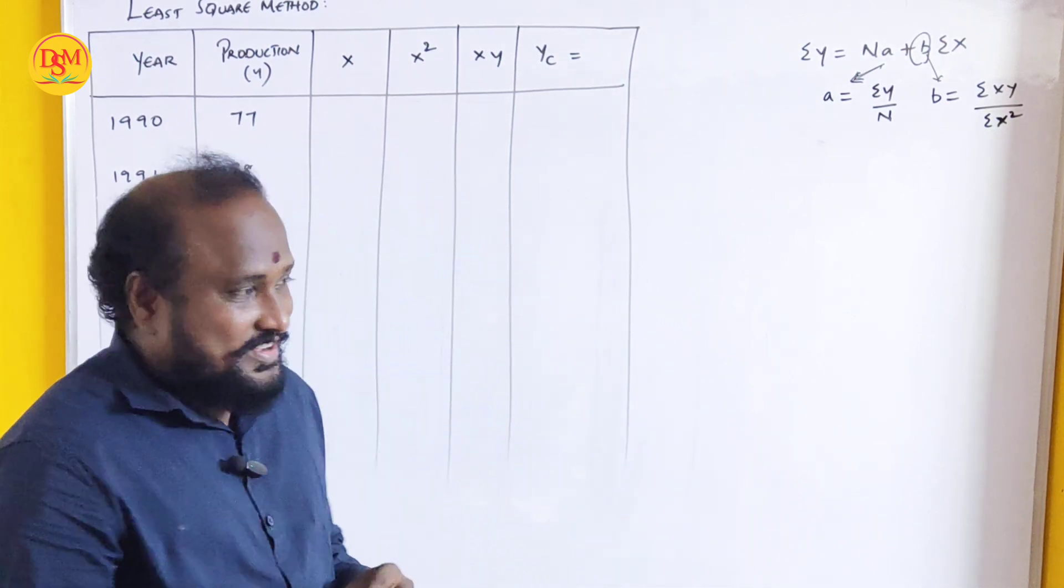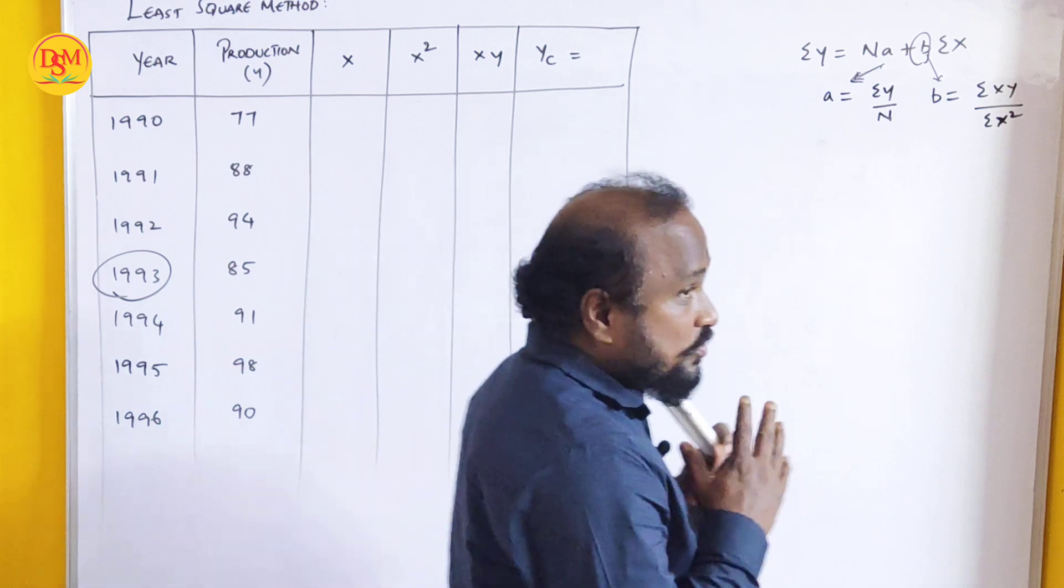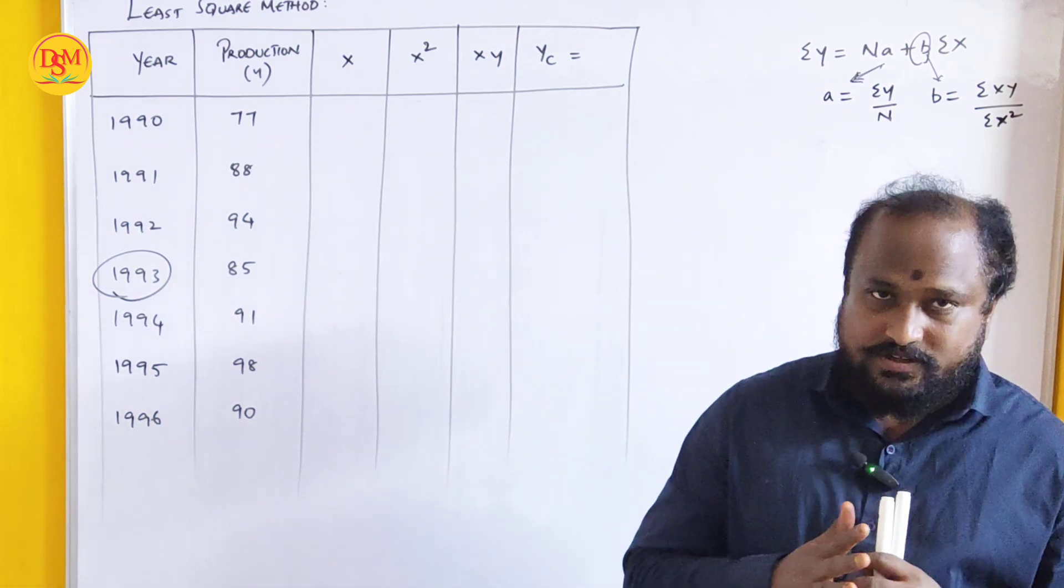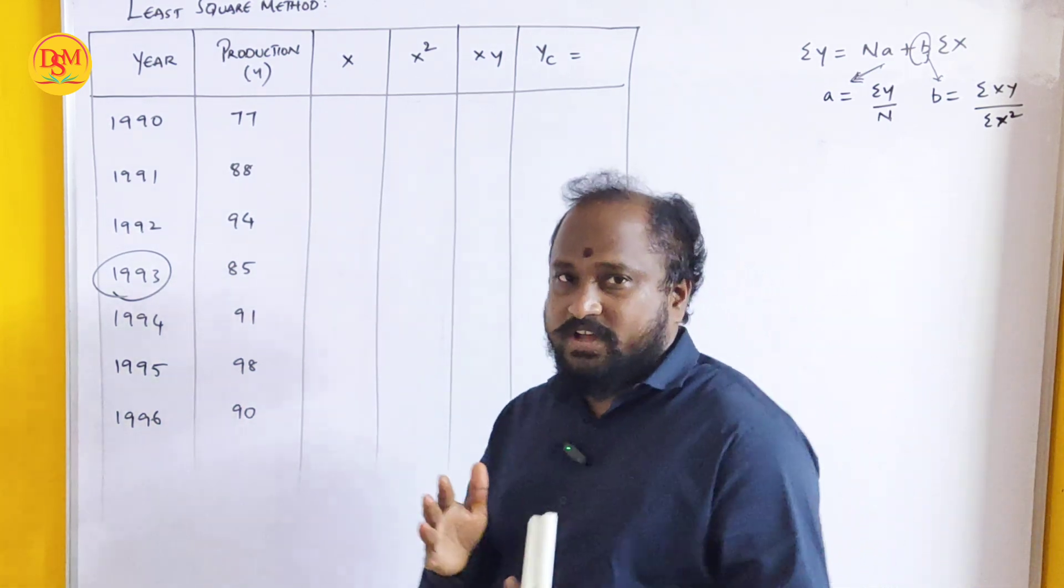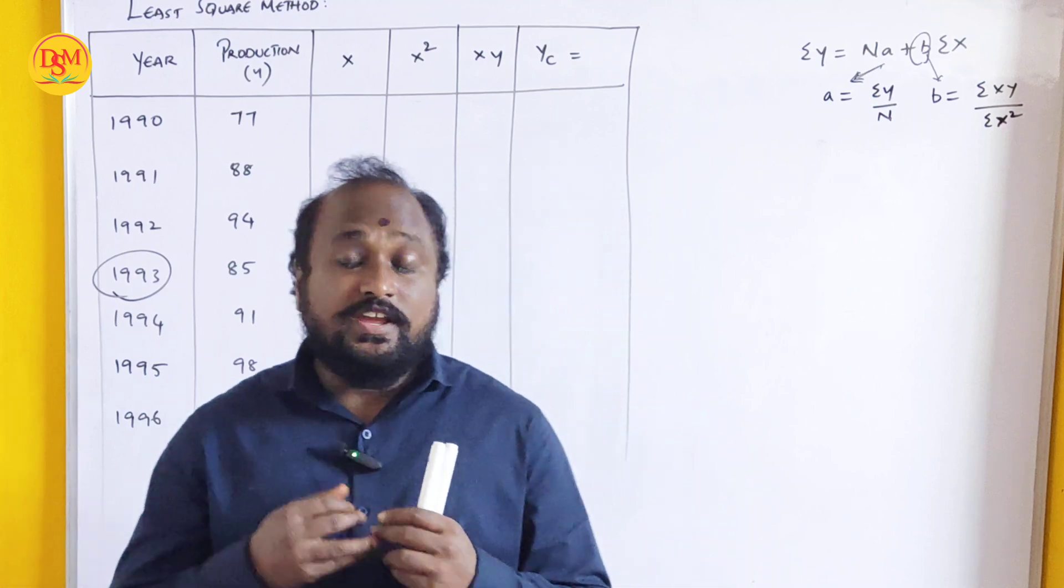Least square method is a method whereby it is most popularly used. This is a very popular method, widely used method. Why do we use this method?